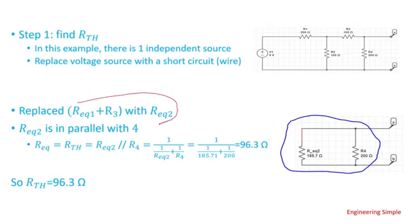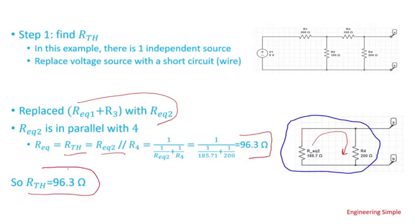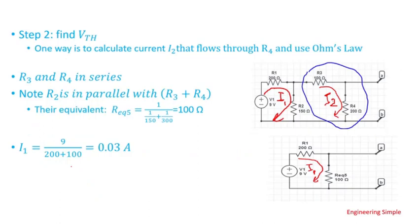I replace R_equivalent_1 in series with R3 with R_equivalent_2, which is 185.71 ohms. Notice that R_equivalent_2 is in parallel with R4. Since there are no more resistances, the Thevenin resistance is found by doing one over (one over R_equivalent_2 plus one over R4), giving 96.3 ohms. So R_Thevenin = 96.3 ohms.